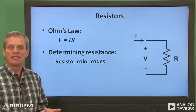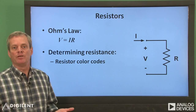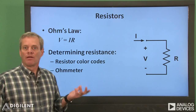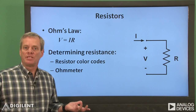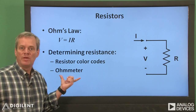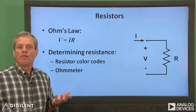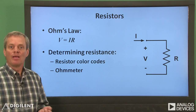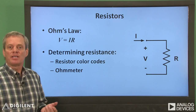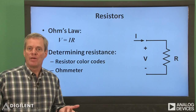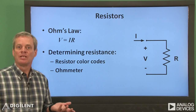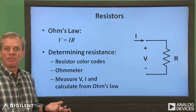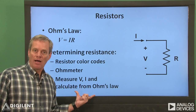Probably the easiest way to do this is with a digital multimeter. DMMs almost invariably include a resistance measurement function called an ohmmeter, which very readily displays the resistance of a resistor to which it is connected. It's also possible to apply power to a resistor, measure the resistor's voltage difference and the current through the resistor, and calculate the resistance from Ohm's law.